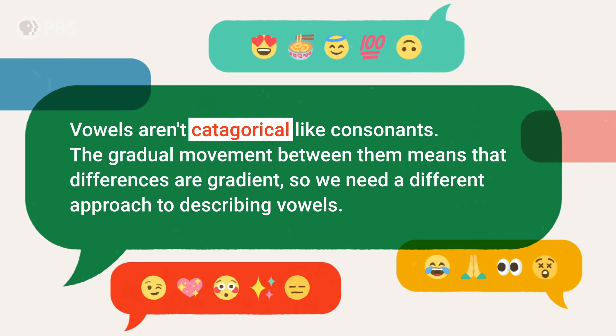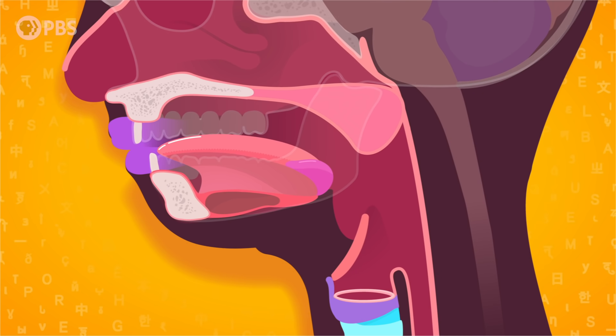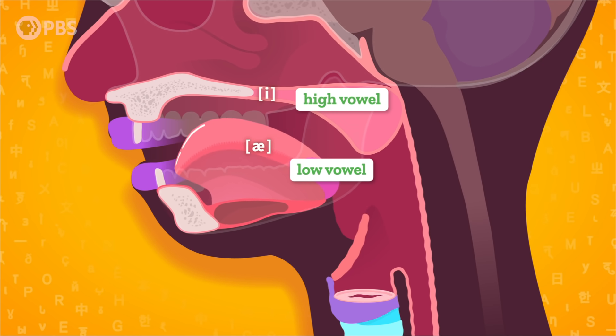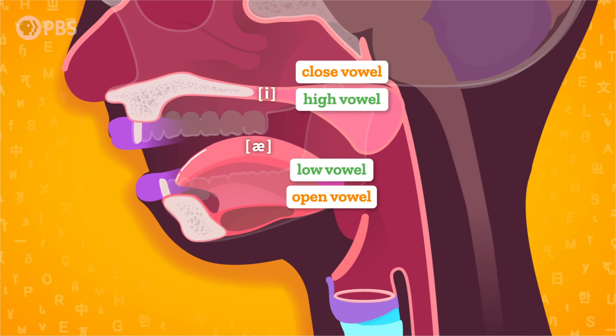The gradual movement between vowels means that differences are gradient, so we need a different approach to describing them. Take the sounds EEEE and AH. The difference between them is how open your mouth is and how close your tongue is to the roof of your mouth. For EEEE, the tongue is very high and close to the roof of the mouth, and the jaw is more closed, while for AH, the jaw is open and the tongue is low. In the IPA, we write EEEE with one symbol and AH with another. Because of where your tongue is when making them, EEEE is a high vowel and AH is a low vowel. Linguists also sometimes call EEEE a closed vowel and AH an open vowel, based on whether your jaw is more open or more closed.